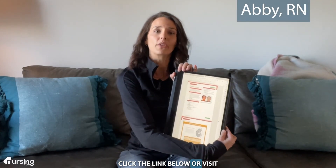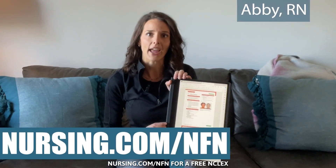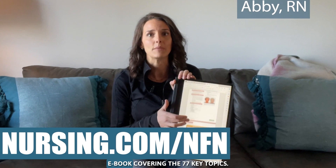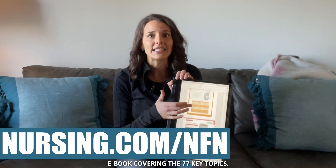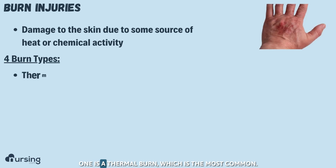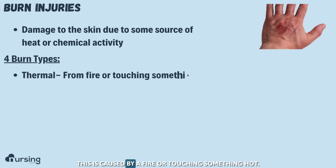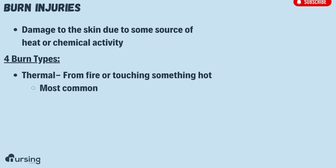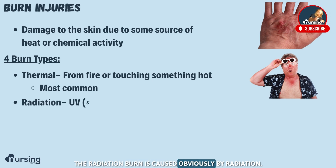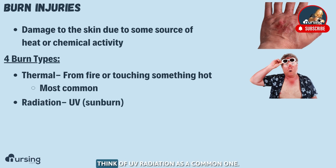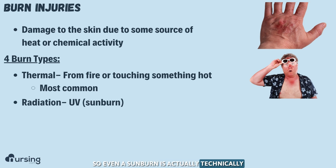There are actually four types of burns. The first is a thermal burn, which is the most common — caused by fire or touching something hot. A radiation burn is caused by radiation; UV radiation is a common example, so even a sunburn is technically considered a radiation burn.